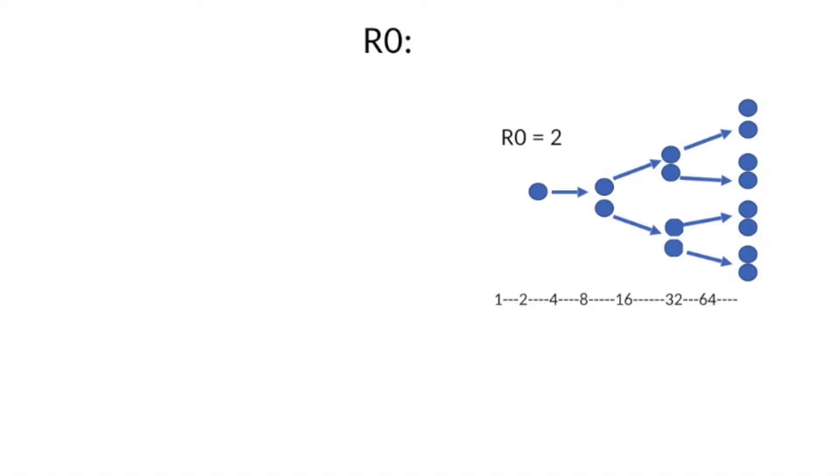Suppose R0 is 2 — what does this mean? The index case produces two cases. Those two active cases, when they come in contact with a susceptible population, keep increasing the chain of contacts unless intervened. This means each case produces 2, then 4, 8, 16, 32, and so on — there is an exponential rise of cases.